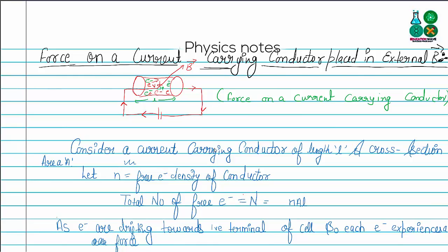Consider a current carrying conductor of length L. A is the cross-sectional area of this conductor. Let N be the free electron density of the conductor, and the total number of free electrons in the conductor is capital N, which is equal to small n times A times L — where small n is the free electron density, A is the cross-sectional area, and L is the length of the conductor.